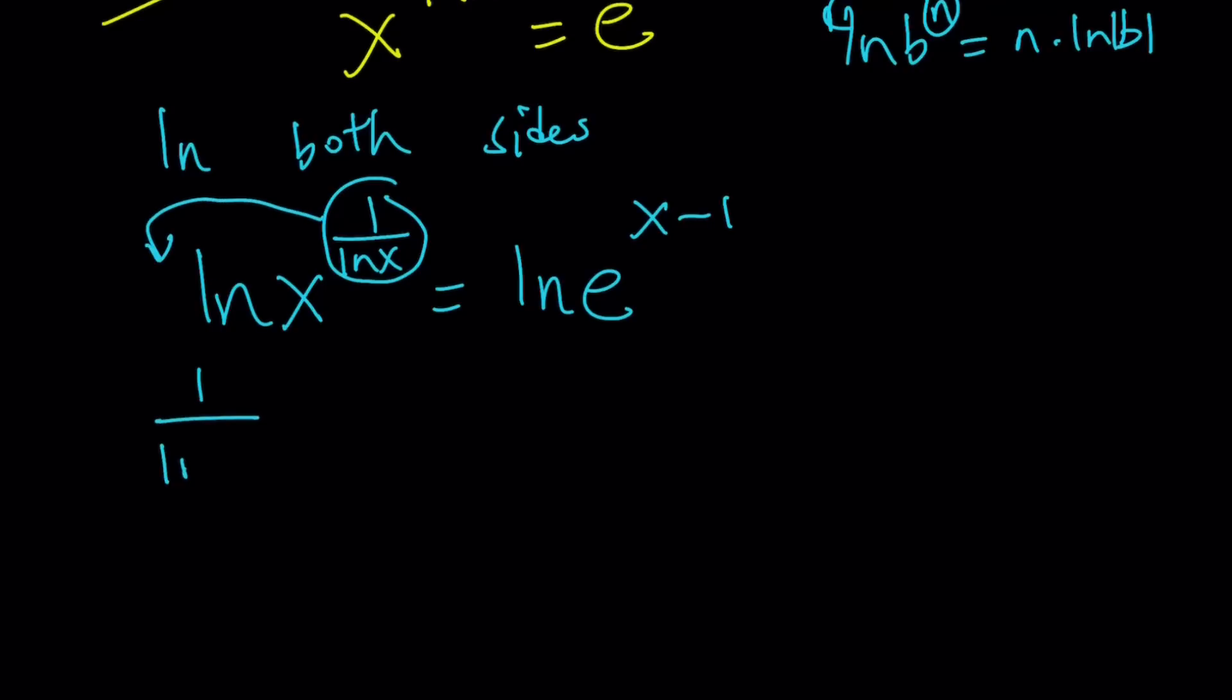That gives me 1 over ln x times ln x equals x minus 1 times ln e. But ln e is just equal to 1, so I don't even need to write it. So we can safely say that ln e to the power m is always m, because m is going to be moved, and ln e is always 1. Great.